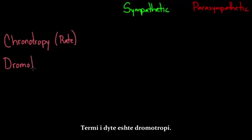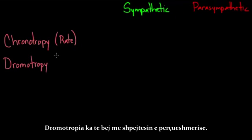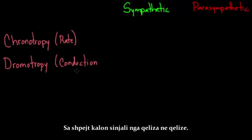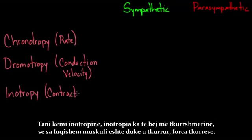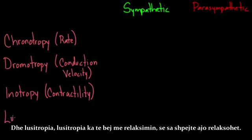Dromotropy is about conduction velocity — how fast a signal is going from one cell to the next. Then we have inotropy, which has to do with contractility — how hard the muscle is contracting, the force of contraction. And lucitropy has to do with relaxation, how fast the heart is relaxing.